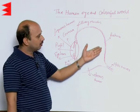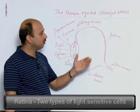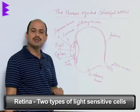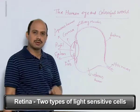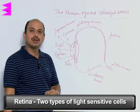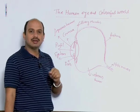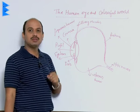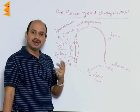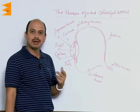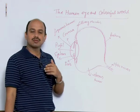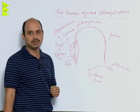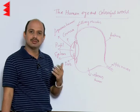Coming back to the retina — the retina has light-sensitive cells. There are basically two types of light-sensitive cells: rod-shaped cells and cone-shaped cells. Rod-shaped cells are responsible for the intensity or brightness of images, whereas cone-shaped cells are responsible for the colour of objects and are considered colour cells.